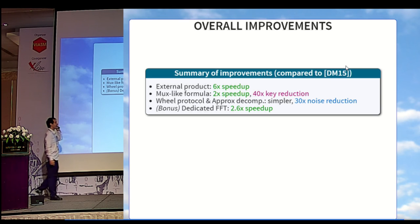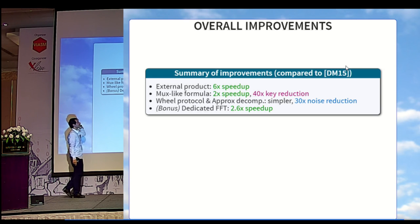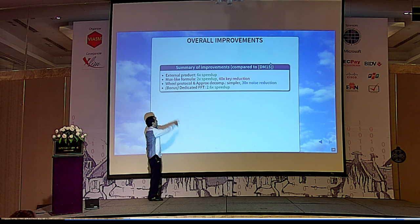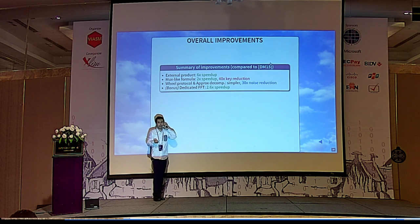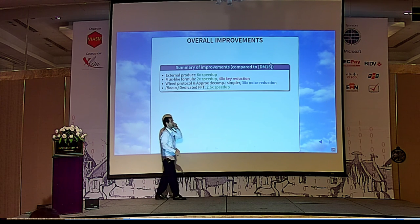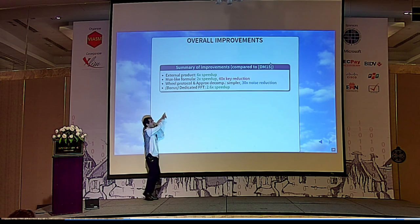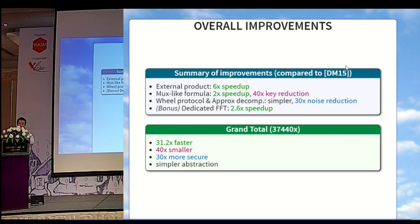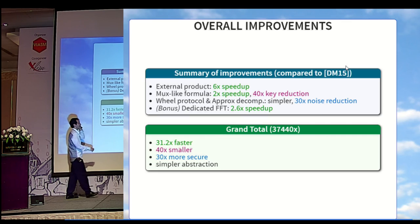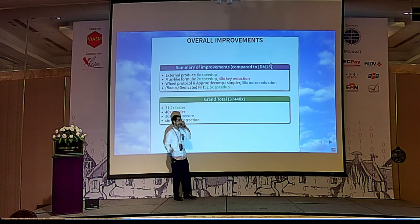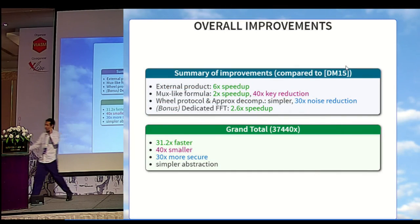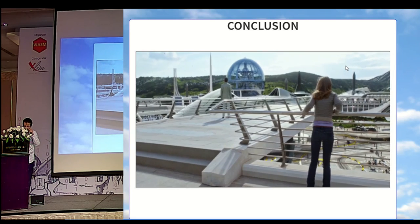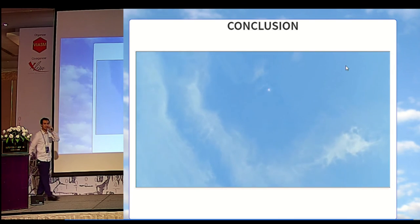If you take the summary of all the speed-up improvements, you get a factor 6 thanks to the external product, a factor 2 in time for the mux-like formula, and also a factor 40 in key size reduction. The description with the wheel protocol and also the fact that there is no test vector in the end gives us a 30x noise reduction and also a much simpler abstraction. And as a bonus, which is not in the paper, we implemented a dedicated FFT, which gives us an additional 2.x speed-up. If you multiply all these numbers together, you can see that we improved the scheme of Ducca-Mishan from last year. That was really an amazing scheme by a factor of 37,000. And we also get a much simpler abstraction.